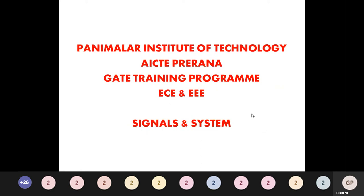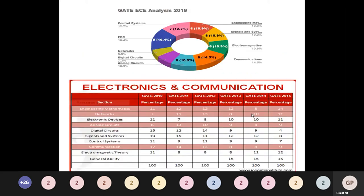A warm welcome to all gathered here on behalf of Panemular Institute of Technology AICT Pre-RANA GATE training program. Today we will discuss signals and systems as part of a GATE training program for EC and EEE students. Signals and systems is one of the important topics in the GATE syllabus. For EC students, in 2019, the contribution was 10.9%. There is a good number of questions appearing from signals and systems, ranging from 8% to 15%, with three to six questions minimum and up to eight questions maximum.